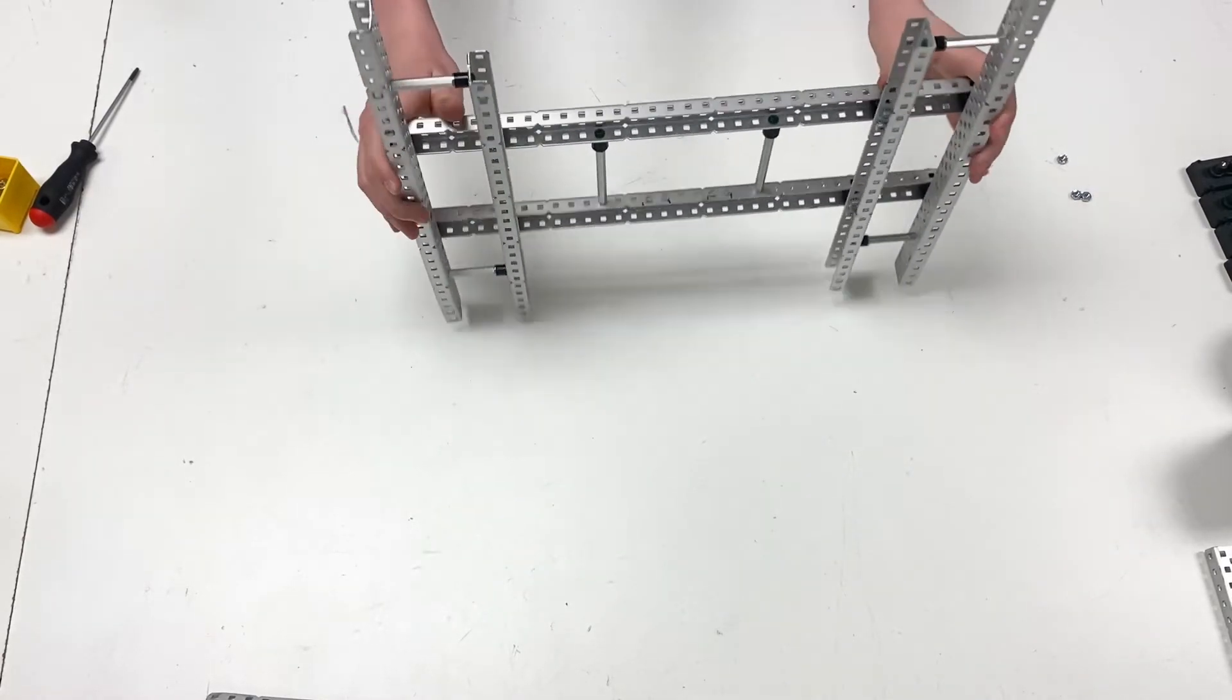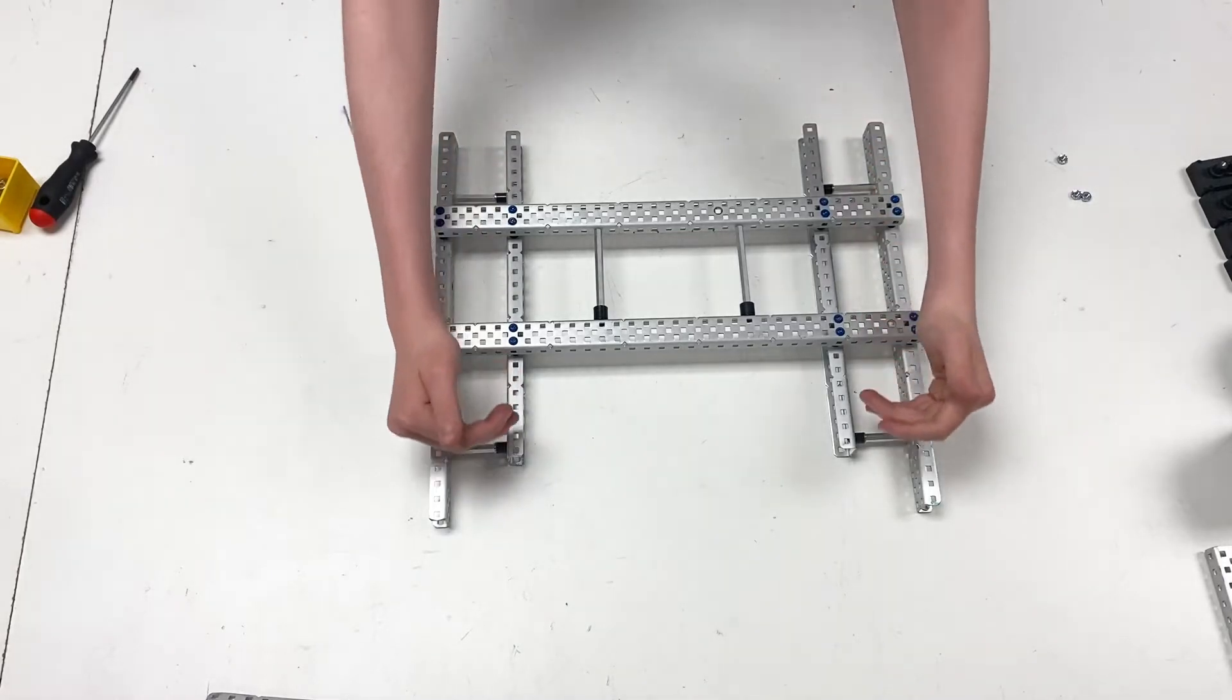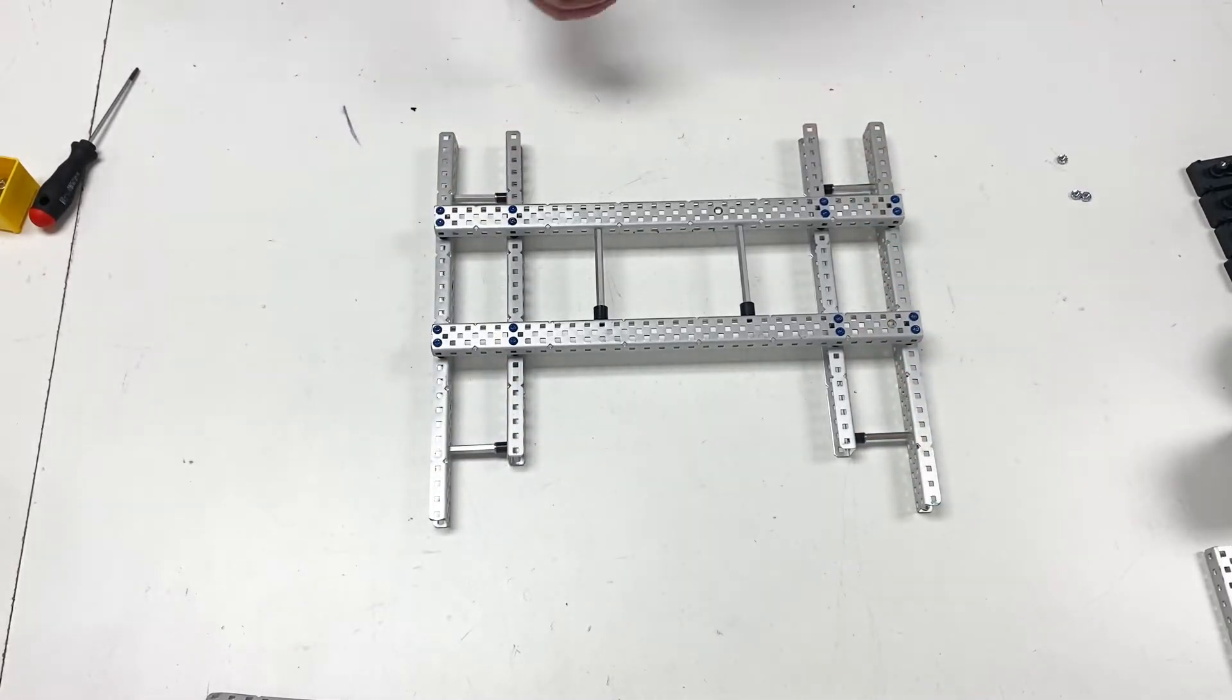The importance of squaring is so that in autonomous or when you're driving, the distances between the front and the back are the same and the distances between the two are the same. This makes it so that autonomous is more consistent and driving, there's less friction. Overall, squaring is a very important part of your driving.